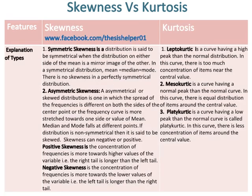Explanation of types. Symmetric skewness: a distribution is said to be symmetrical when the distribution on either side of the mean is a mirror image of the other. In a symmetrical distribution, mean is equal to median is equal to mode. There is no skewness in a perfectly symmetrical distribution.